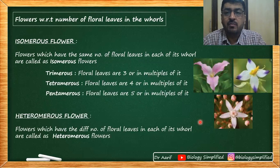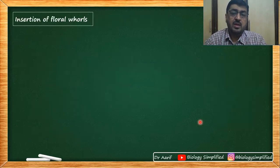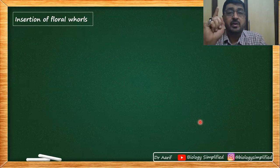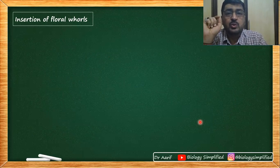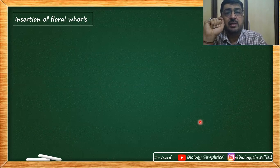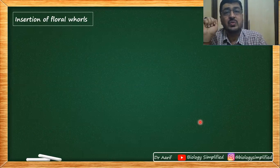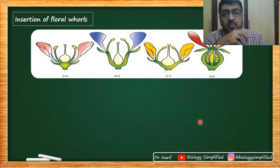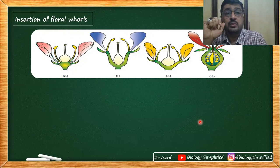If the number of floral leaves differs across whorls, the flower is called heteromerous. Now, with respect to the insertion of floral whorls on the thalamus: floral whorls arise from nodes present on the thalamus. How calyx, corolla, androecium, and gynoecium are inserted on the thalamus determines the type of flower. The same diagram is present in both the government textbook and NCERT.